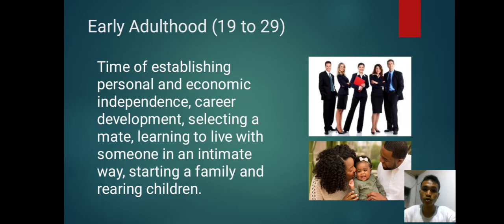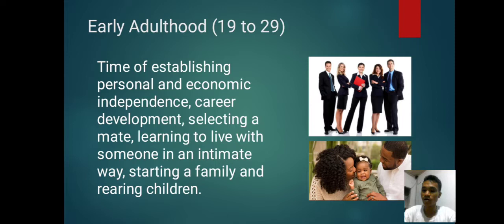Early adulthood, 19 to 29. This is the time for establishing personal and economic independence, career development, selecting a mate, learning to live with someone in intimate ways, and starting a family and rearing children. At this stage, a person focuses on their career and starts to find their partner in life and is ready to have their own children.